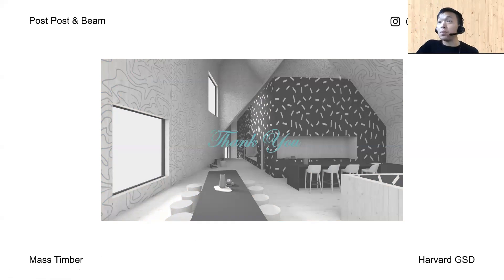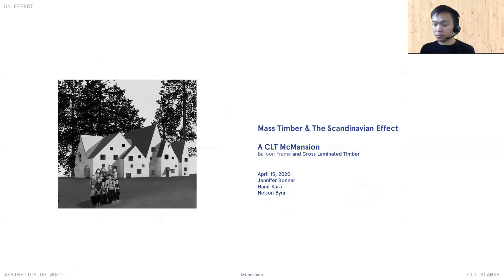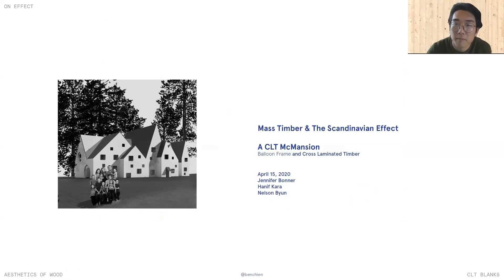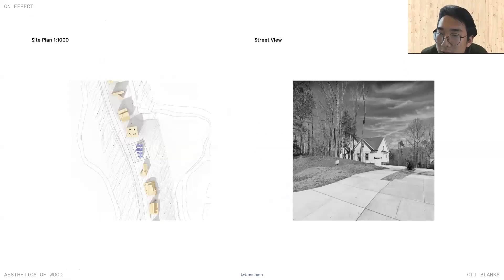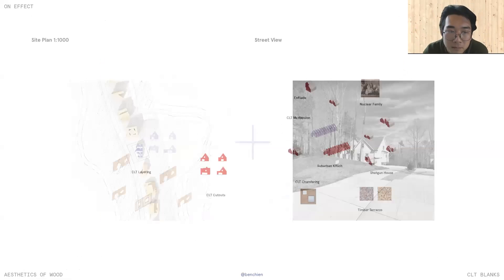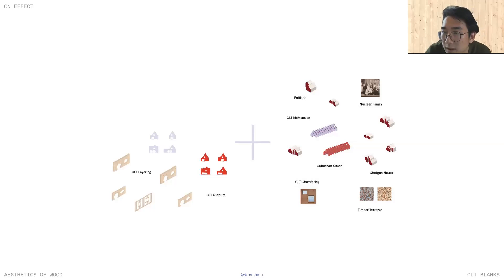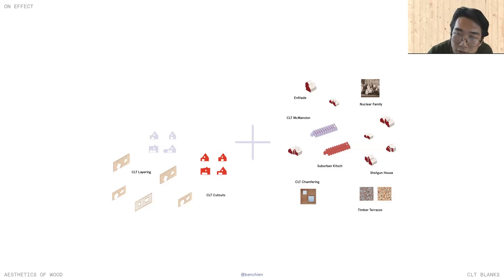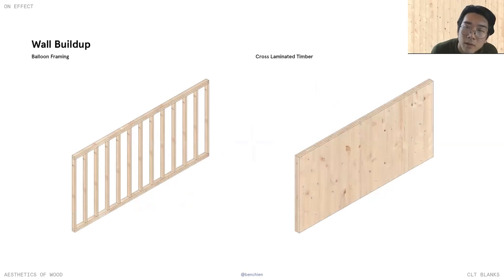Nothing screams American bigness quite like the American McMansion. Please welcome Benson Chen. I'm Benson Chen from California and this is a Cross Laminated McMansion. I'm situated on one of the sites with a milder terrain and an existing classic American suburban home. The house weaves a series of concepts from CLT layering, cutouts, McMansions, enfilades, the shotgun to the nuclear family. My nuclear family is comprised of 10 people: two parents and eight children.